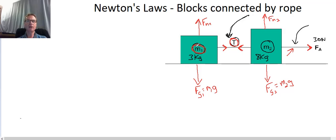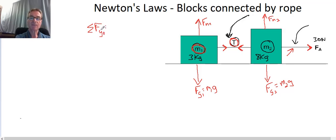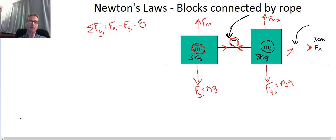Let's look at the y-direction forces first. The blocks are not accelerating in the y-direction — they're sliding on a table left and right, not up and down. So the sum of y-forces for block 1 is the normal force minus the gravitational force, which equals zero. This just tells us the normal force equals the gravitational force for each block. We won't get any additional useful information from the y-direction.